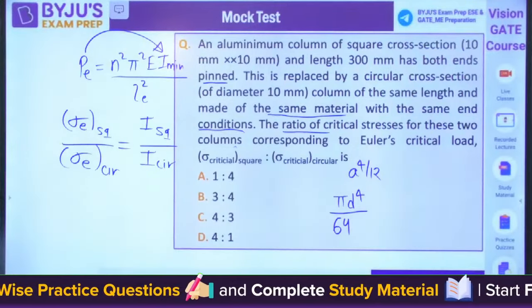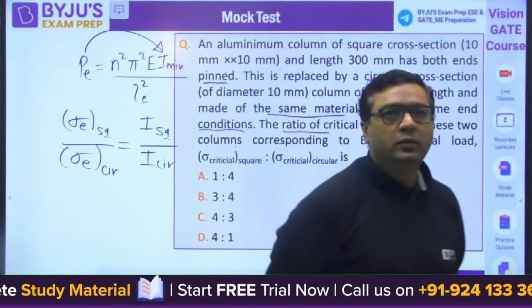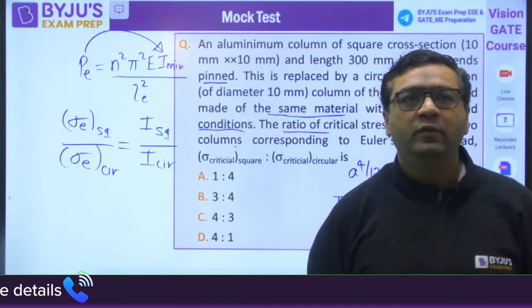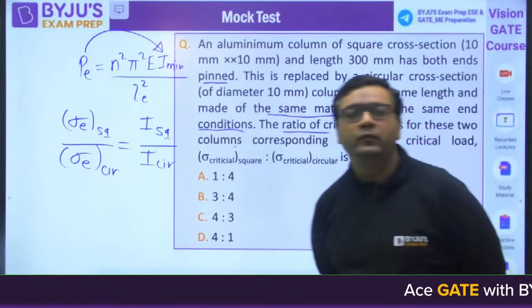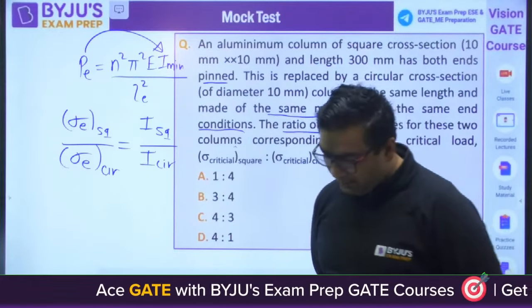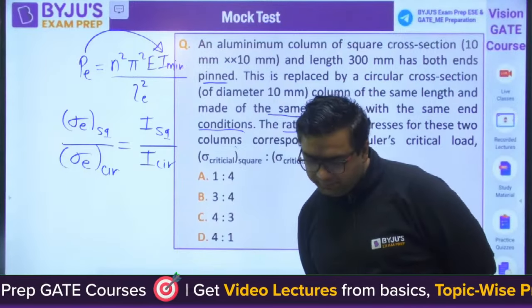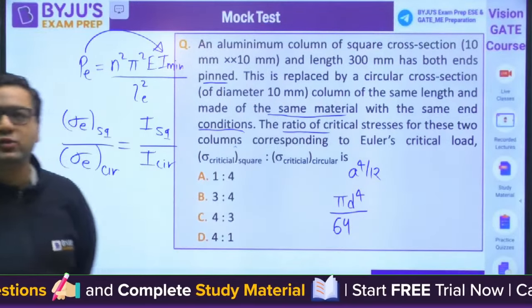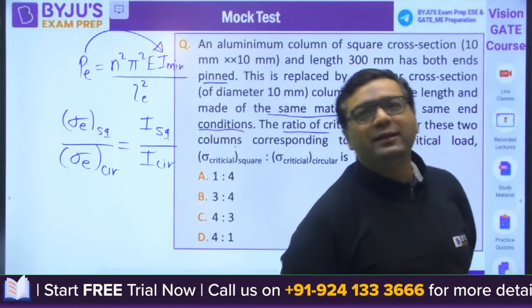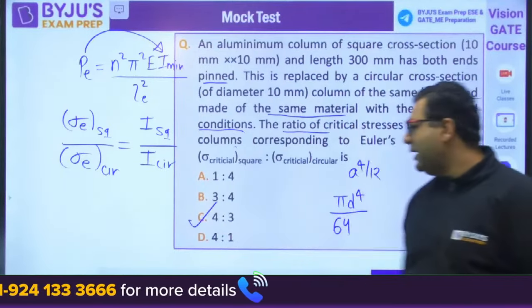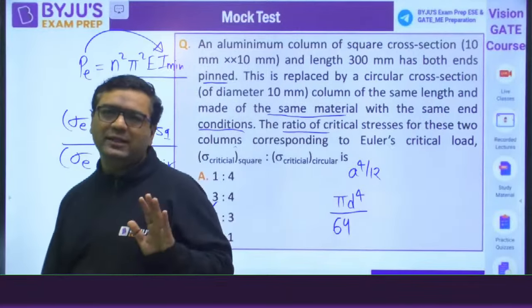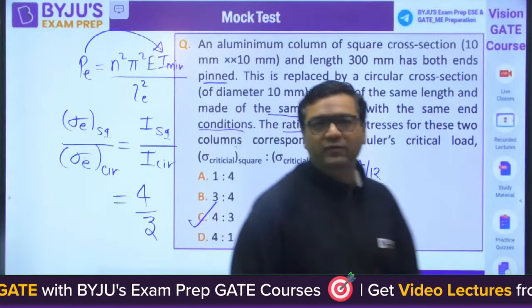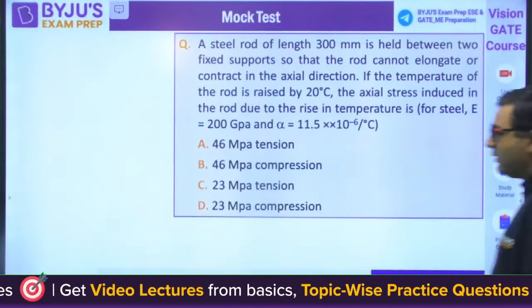Load is directly proportional to I_min, so the ratio equals I_square / I_circle. Area moment of inertia for square is A⁴/12, and for circle it is πD⁴/64. Solving this, the answer is C — 4/3 is the right answer.